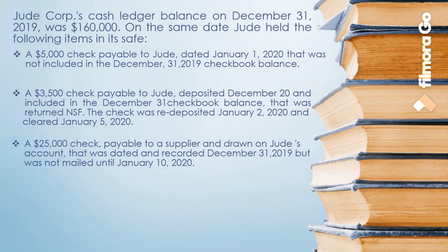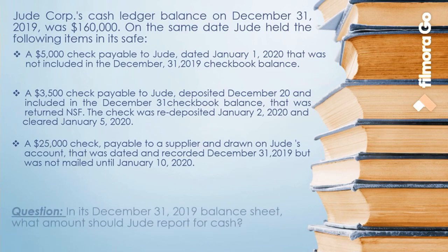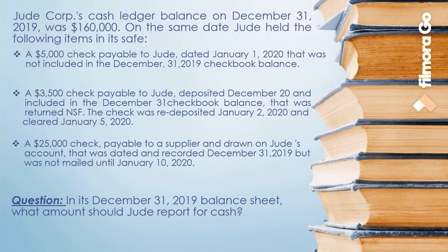Next: a $25,000 check payable to a supplier, drawn on Jude's account, was dated and recorded on December 31, 2019 but was not mailed until January 10, 2020. Since the check drawn against Jude's account was still in their possession until December 31, 2019 and delivered only on January 10, 2020, no entry should have been made until the check was mailed or delivered. Therefore, a reversal entry should be made to correct the understatement of Jude's cash balance per book.